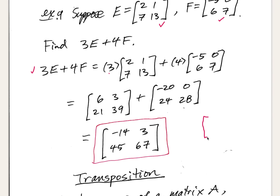If I take any 2 by 2 matrix and add the 2 by 2 matrix consisting solely of zeros, that leaves the original matrix unchanged. This is what we call the 2 by 2 additive identity. You could create an additive identity for a matrix of any dimension — it would consist solely of zero entries.